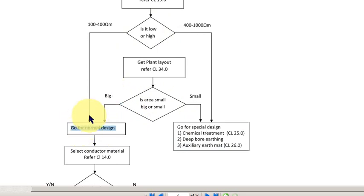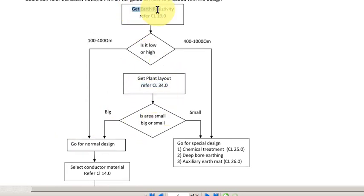Once you come to normal design, before that, you have to get the plant layout to know the area. So, the main inputs are: first get the resistivity, then the plant layout, then the following steps.